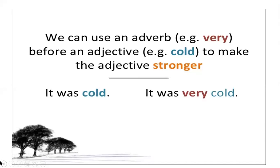We can use an adverb — for example, 'very' — before an adjective like 'cold' to make the adjective stronger. So we use adverbs before adjectives to give the adjective more emphasis. For example, 'it was cold' versus 'it was very cold.' In the second case, the adverb 'very' makes the adjective 'cold' stronger — it was very cold. That's what this unit of the platform is about.